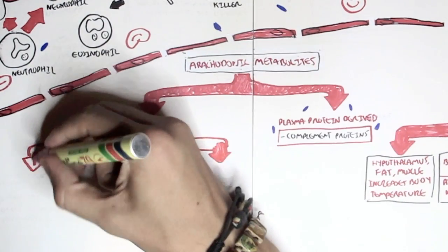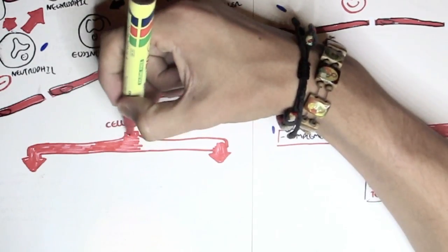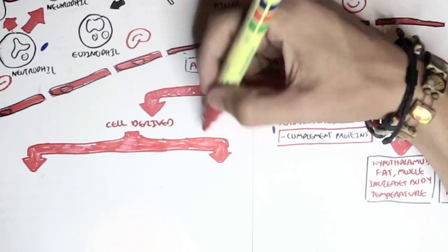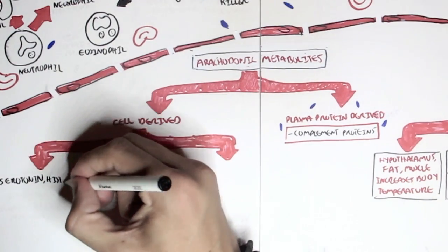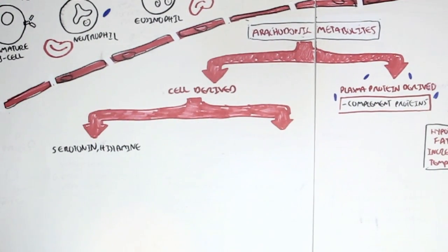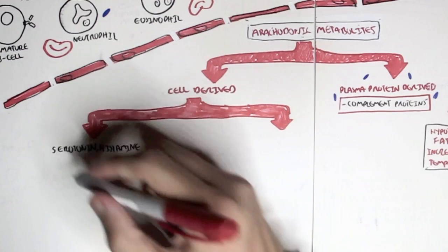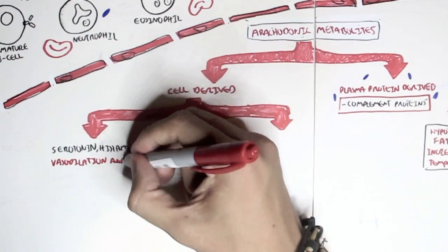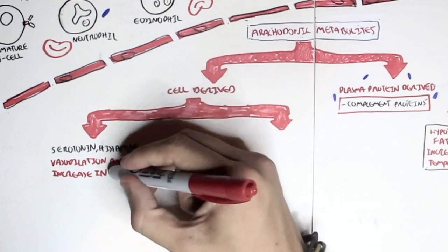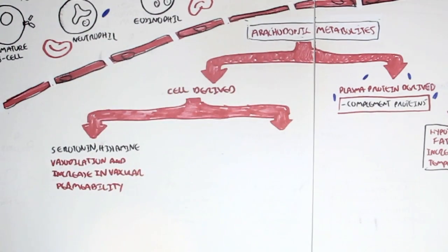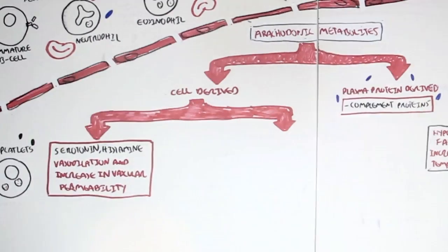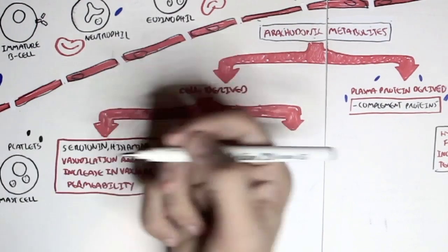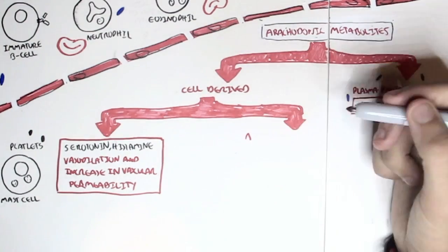And we won't really talk about the plasma protein-derived. We will mainly concentrate on the cell-derived, which means that these inflammatory mediators come from cells specifically. So, cell-derived inflammatory mediators, we have serotonin and histamine, which are good examples. Serotonin and histamine, as we might know, cause vasodilation and increase vascular permeability. And serotonin and histamine are typically secreted by platelets for serotonin and histamine by mast cells. And as we know, this is important for the immune response.